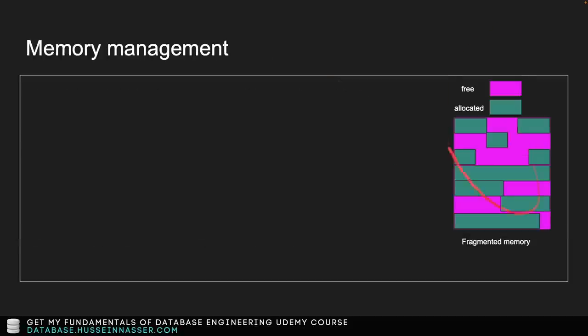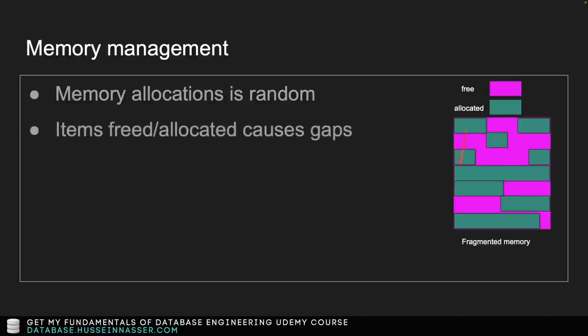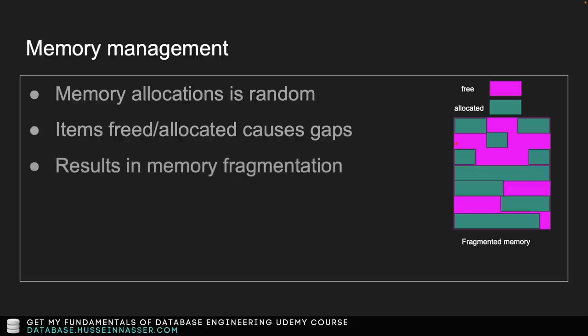Let's talk about memory management. When you allocate items in memory — whether an integer or an array — these items go to random places within the process's dedicated memory area. Initially they might be contiguous, but as you remove and free items, you end up with gaps. This is called fragmentation.